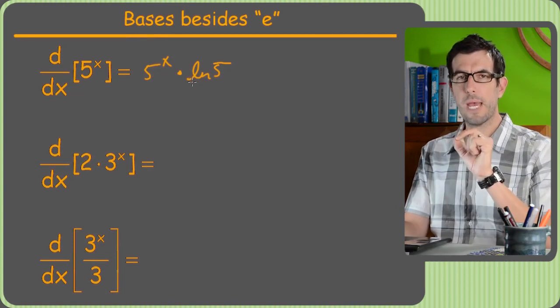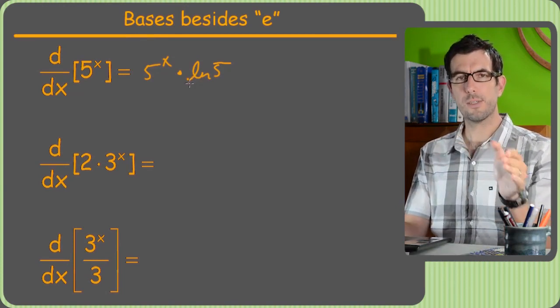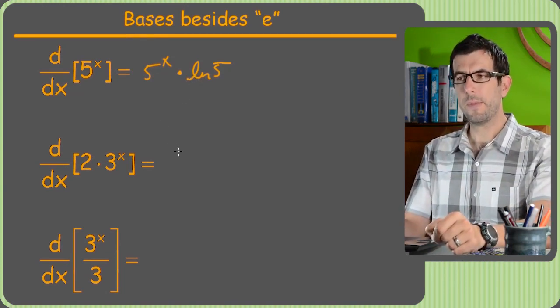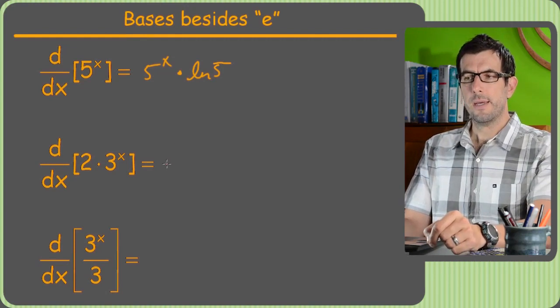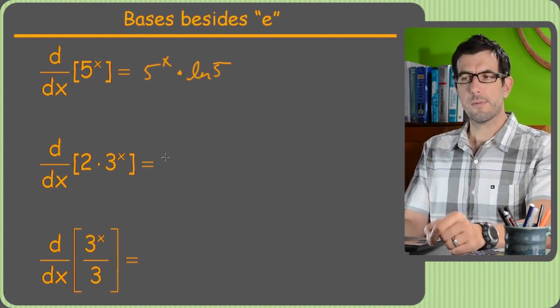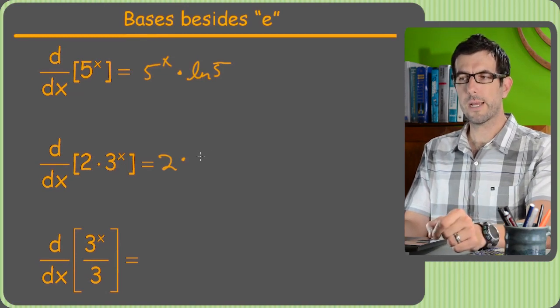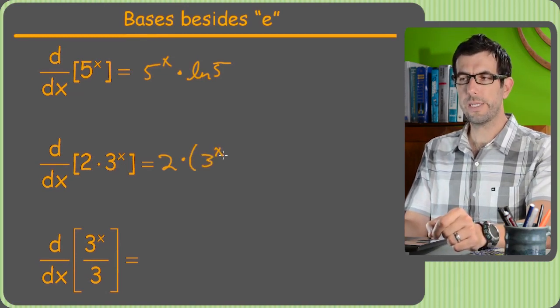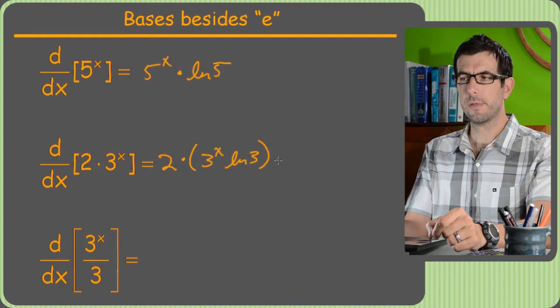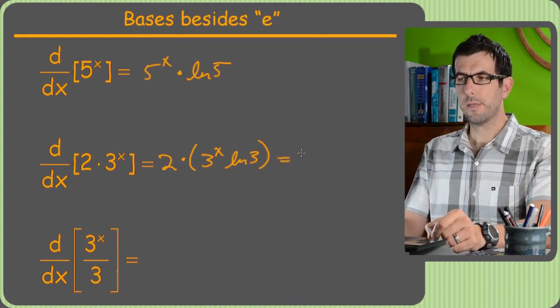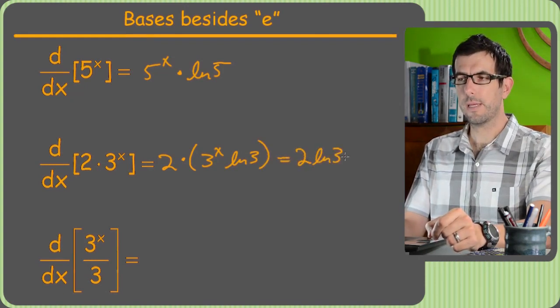I know you haven't done integrals yet, just if you happen to be stopping by this and your class is already in the second half calculus, just an FYI. 2 times 3 to the x, well, we're just going to leave the 2. Then the derivative of 3 to the x is just 3 to the x ln of 3. So we'll end up with 2 ln of 3 times 3 to the x.